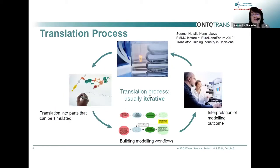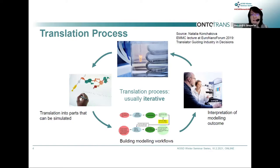I need to introduce the translation process because it's familiar to those of us who have worked on these projects for a long time. The idea is that somebody in industry has a problem, and you think about how computational or materials chemistry can help them. You translate it into parts you can simulate, build modeling workflows, define what input is required, what codes are required, what the raw output is, how to get to processed output, and how to answer the original question. It's very important to retranslate back from your modeling language into something your industrial partner can understand.